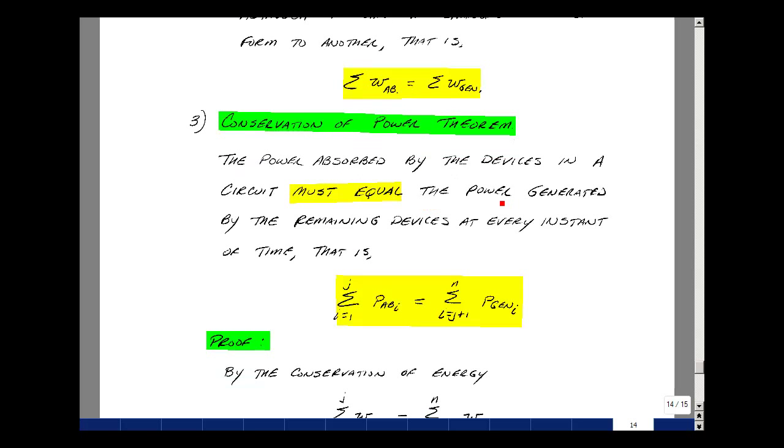The power absorbed by the devices in a circuit must equal the power generated by the remaining devices at every instant in time. Write this mathematically as a summation of the power absorbed, maybe from elements one through j, equaling the sum of the power generated by the remaining elements, say j plus one through n.